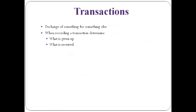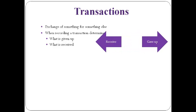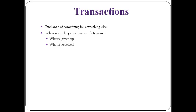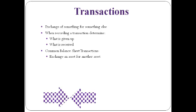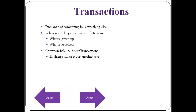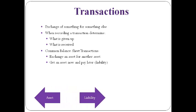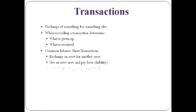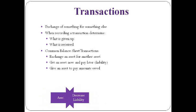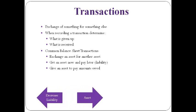A transaction is an exchange of something for something else. Each transaction requires that something is given up and something else is received. We will discuss the transactions that only change the balance sheet. The first is that one asset is exchanged for another. The second is that an asset is received and paid for later, which results in a liability. The third transaction is that an asset is used to pay what is owed.